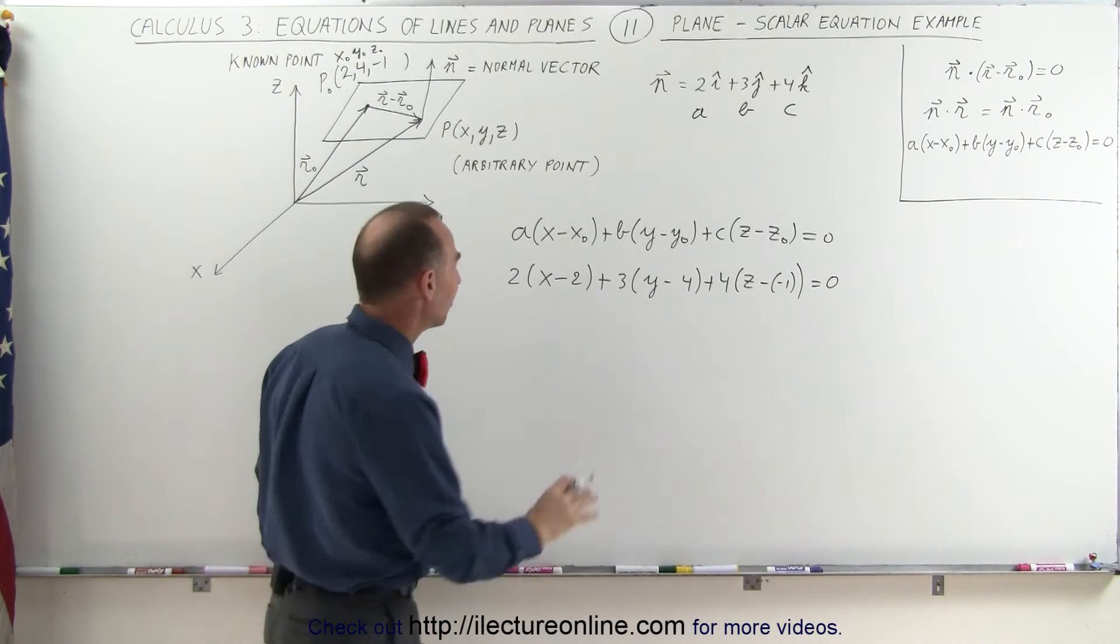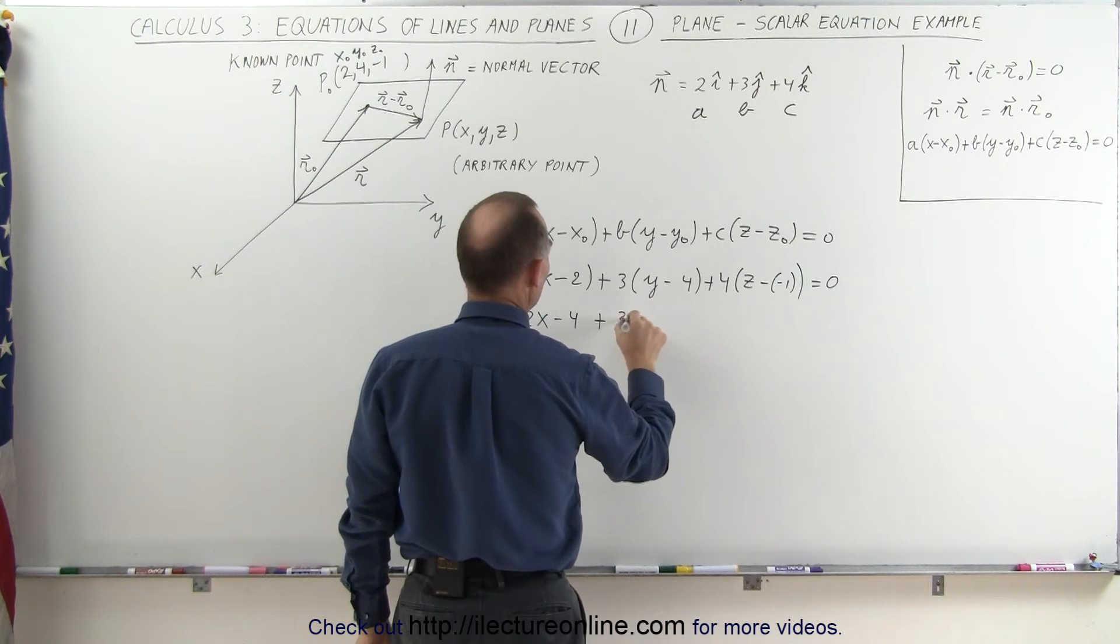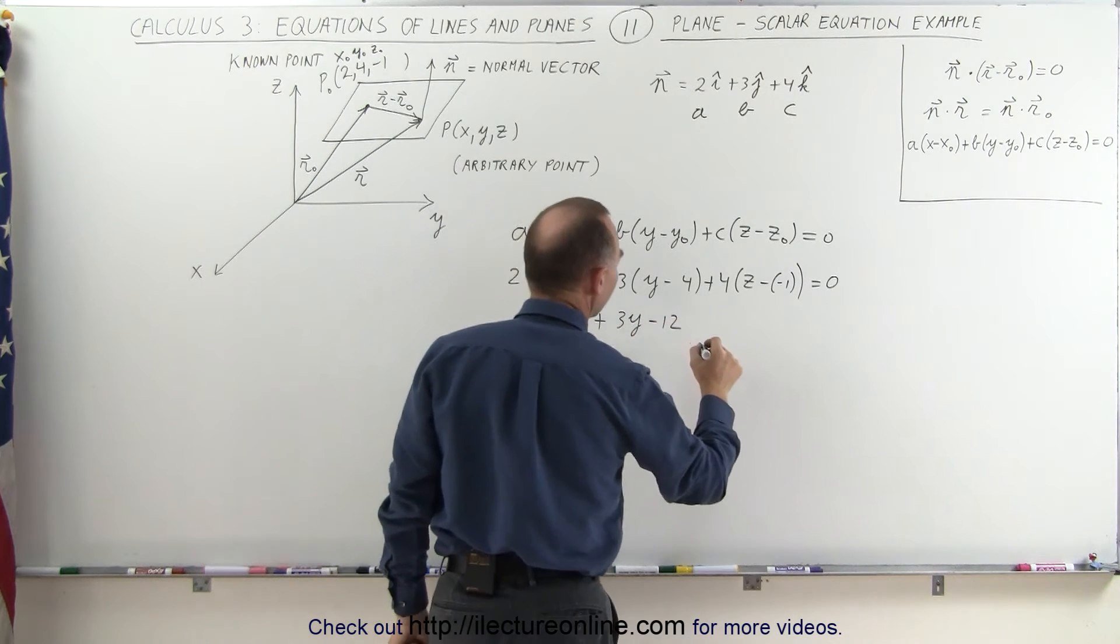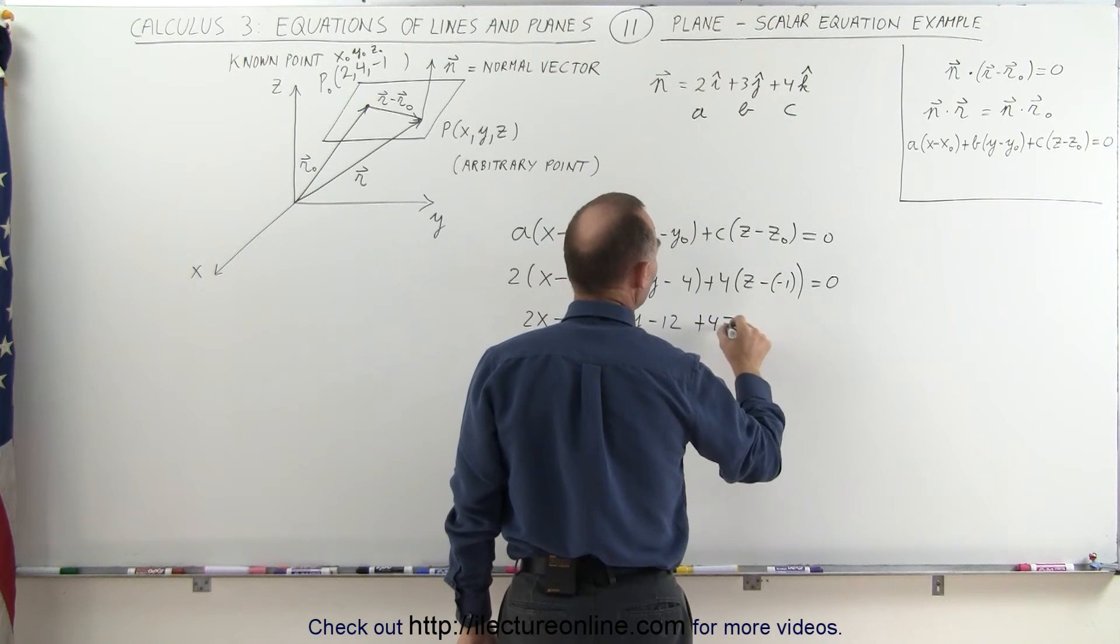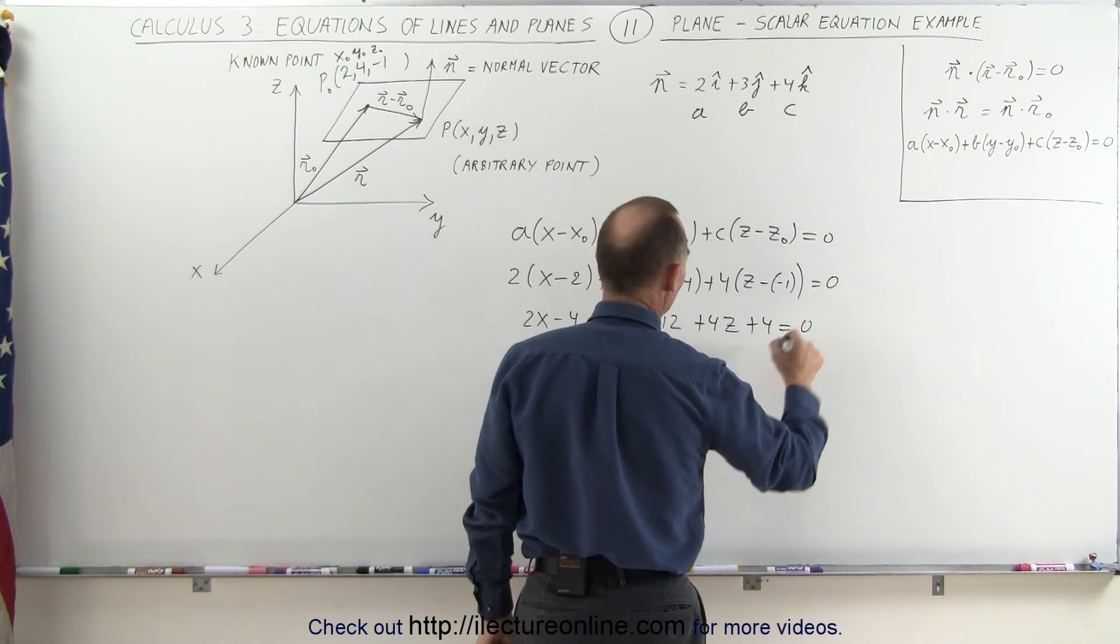Simplifying this, we get 2X minus 4 plus 3Y minus 12 plus 4Z, and the negative times the negative is plus, that becomes plus 4 equals 0.